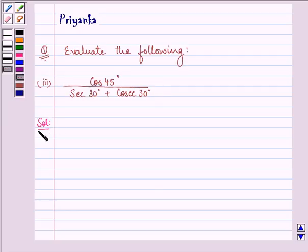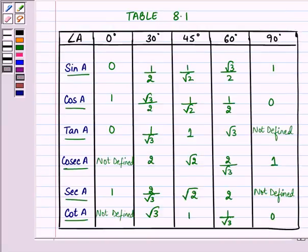Here we should know three values: cos 45°, sec 30°, and cosec 30°. We have cos 45° as 1/√2, sec 30° as 2/√3, and cosec 30° as 2.